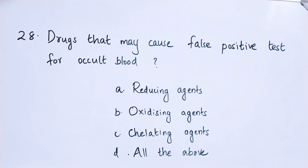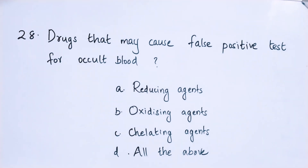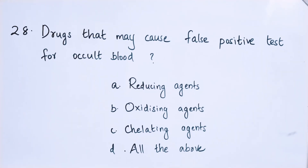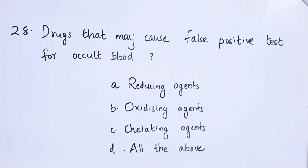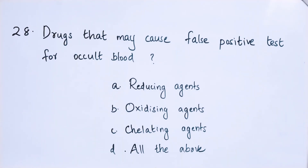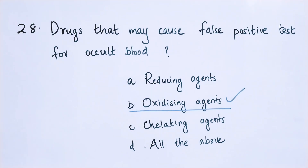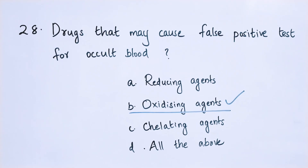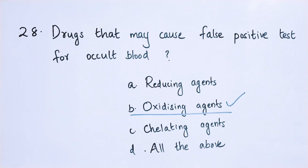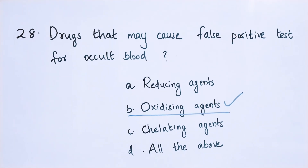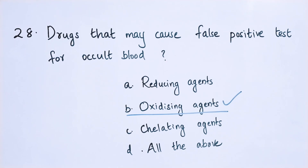Question number 28: Drugs that may cause false positive test for occult blood — option A: reducing agents, option B: oxidizing agents, option C: chelating agents, option D: all of the above. The right answer is option B — oxidizing agents may cause a false positive test for occult blood.